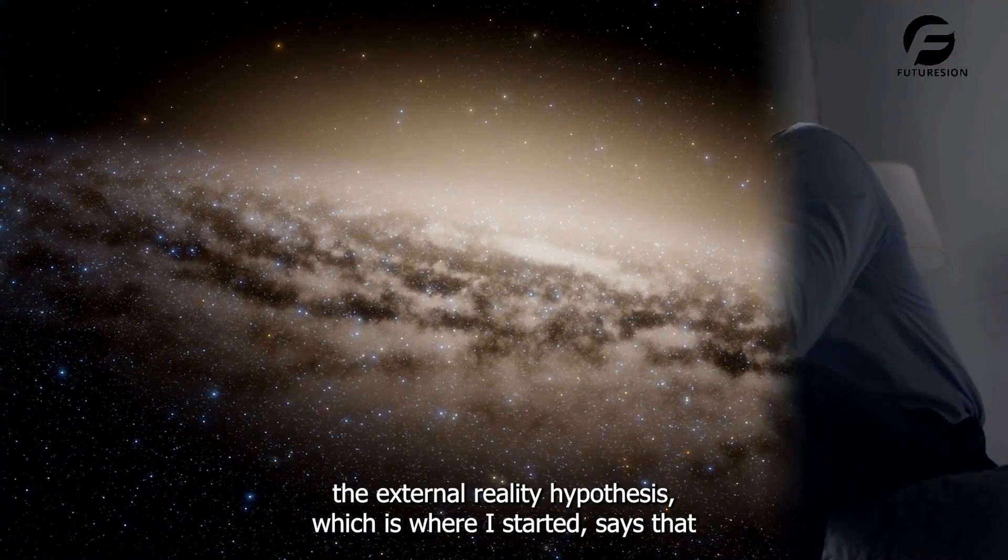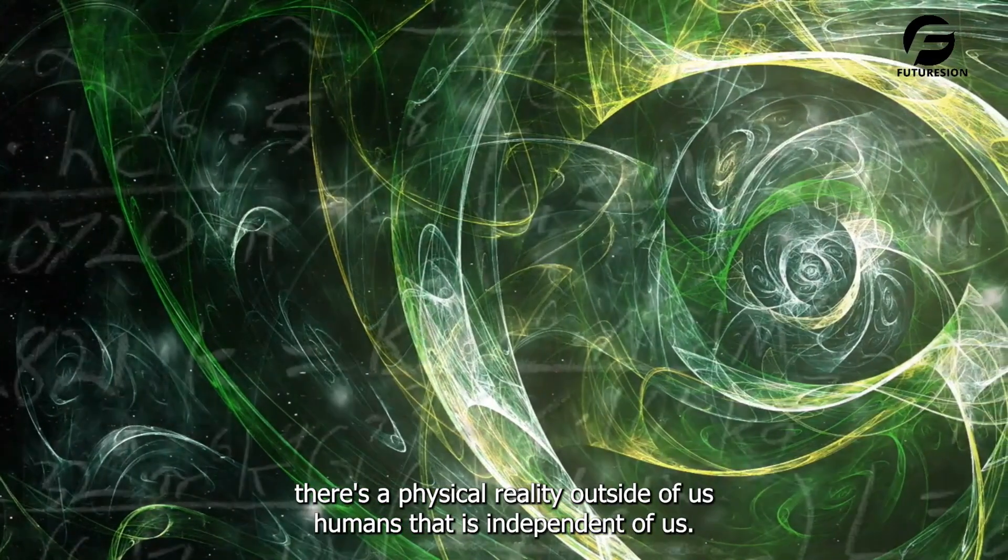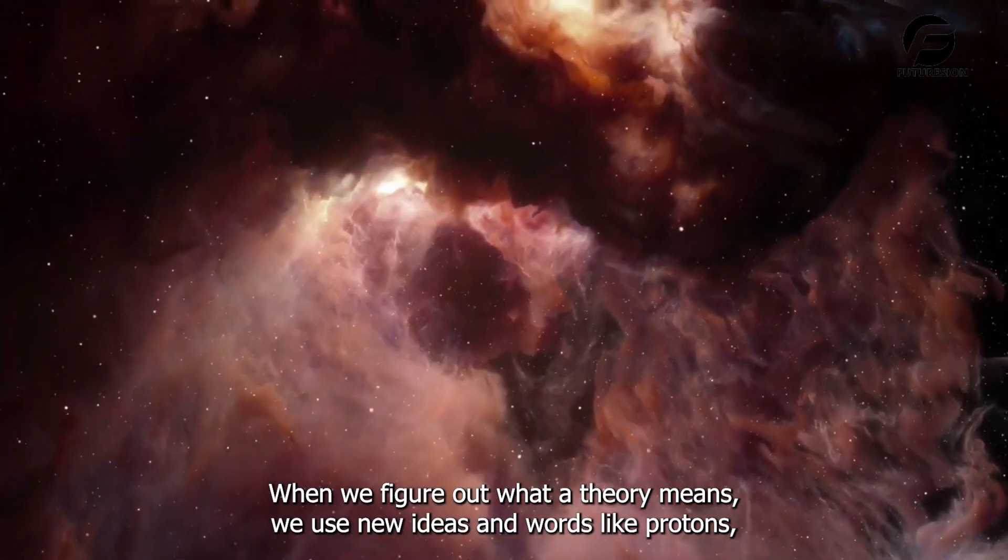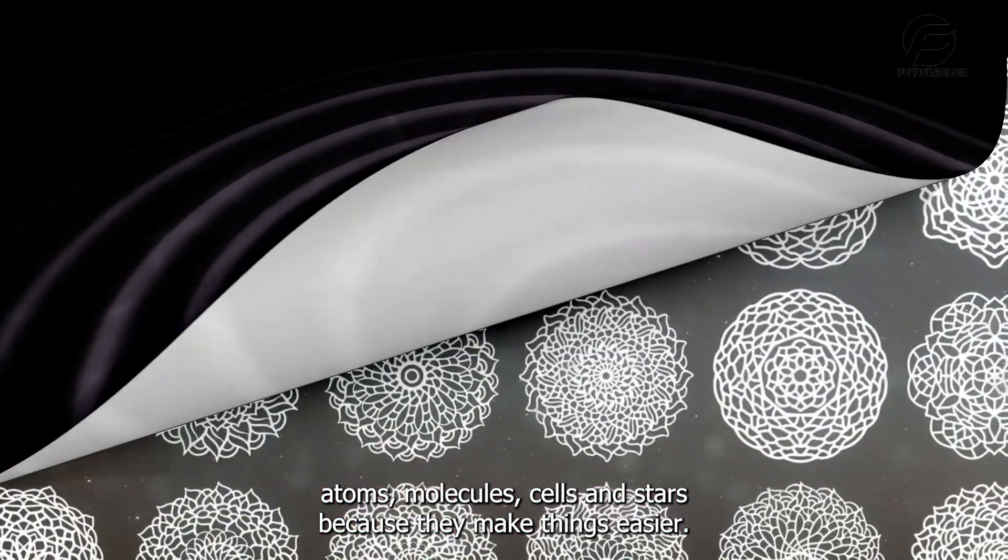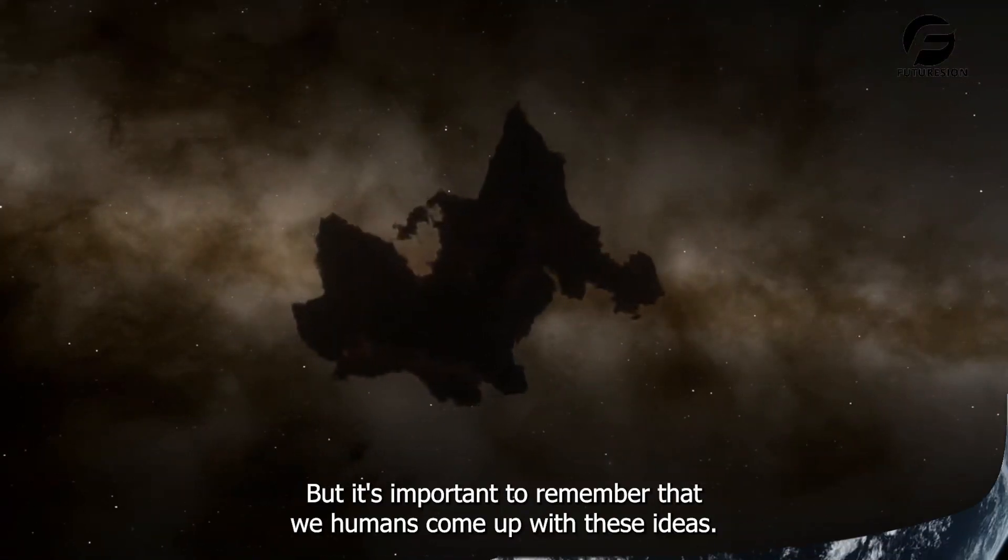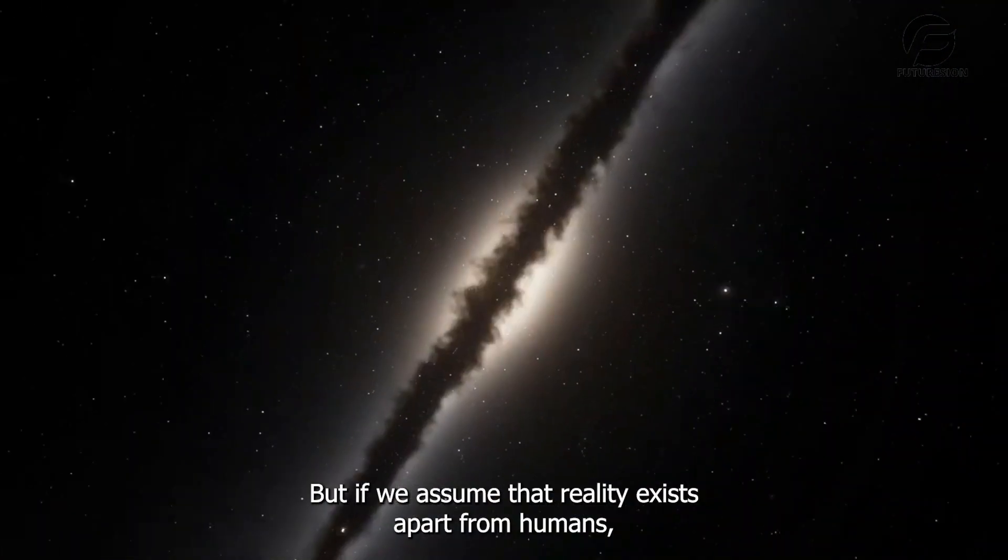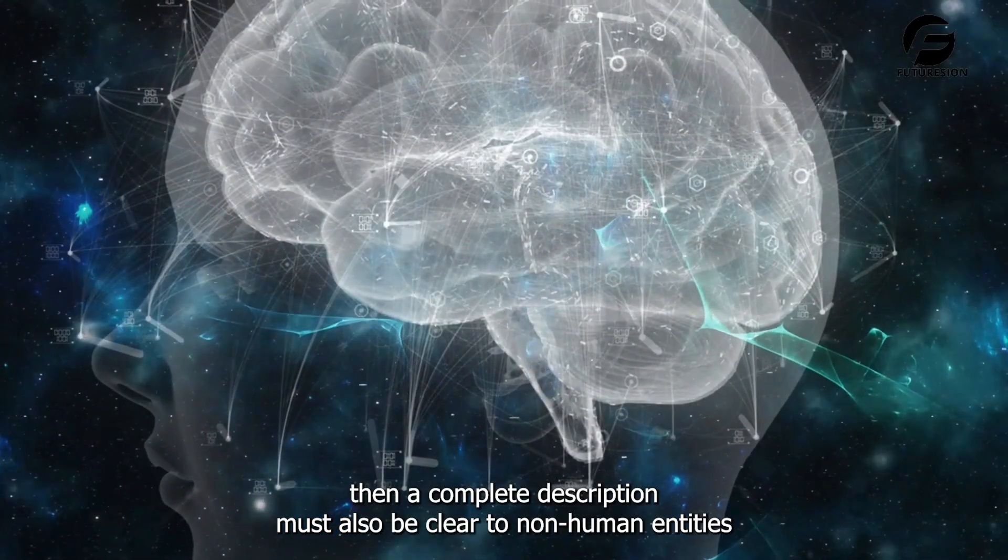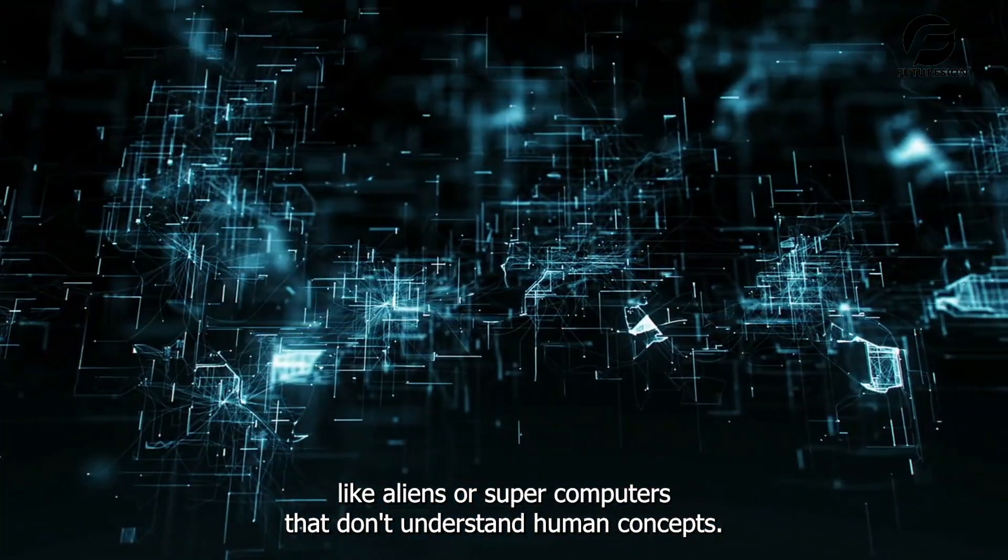The external reality hypothesis, which is where I started, says that there's a physical reality outside of us humans that is independent of us. When we figure out what a theory means, we use new ideas and words, like protons, atoms, molecules, cells and stars, because they make things easier. But it's important to remember that we humans come up with these ideas. In theory, everything could be figured out without all this baggage. But if we assume that reality exists apart from humans, then a complete description must also be clear to non-human entities, like aliens or supercomputers, that don't understand human concepts.